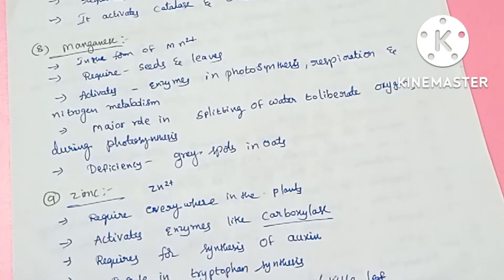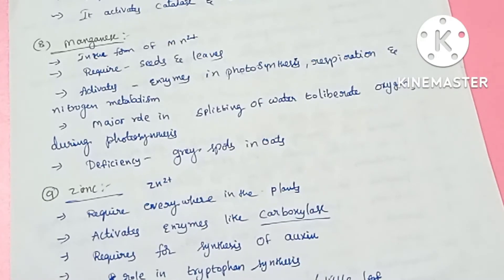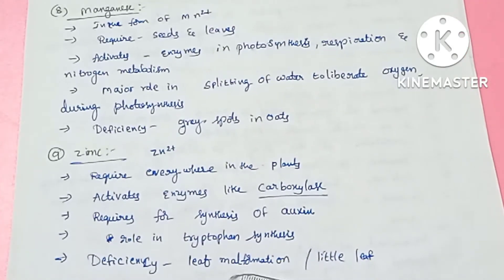Zinc deficiency causes leaves to become small, with decreased leaf size and abnormal leaf structure — a condition known as little leaf formation.